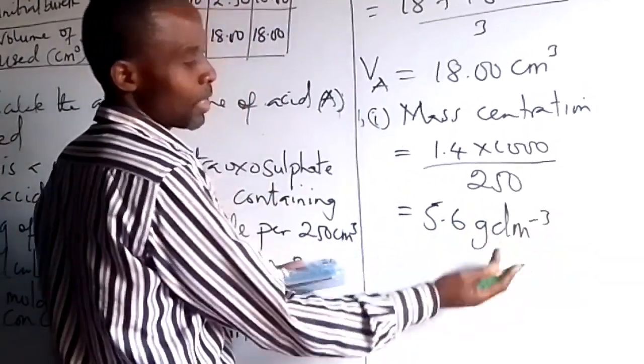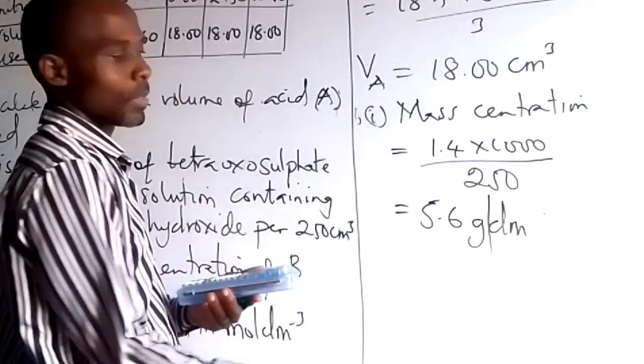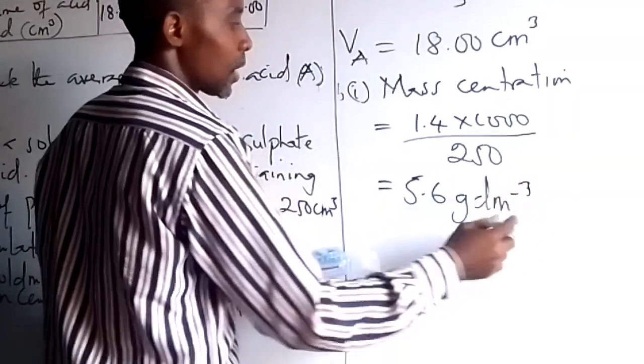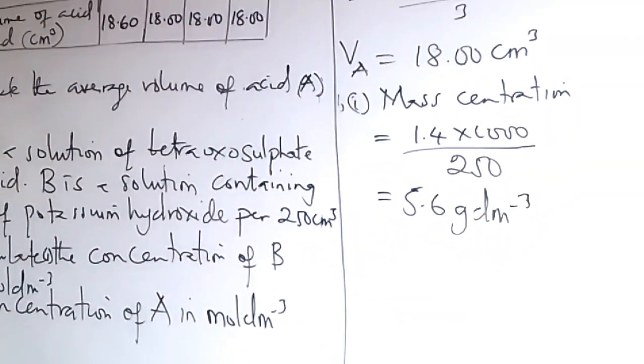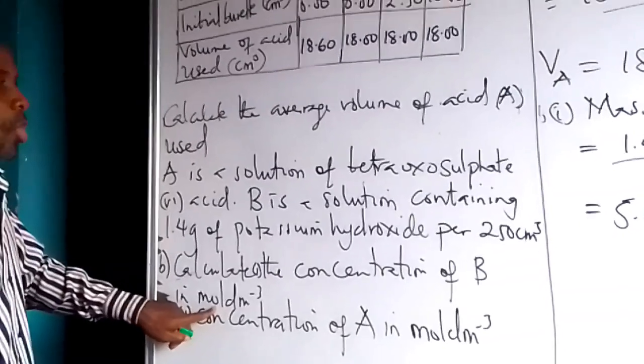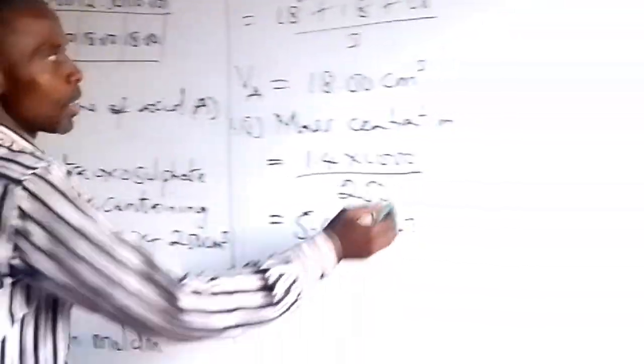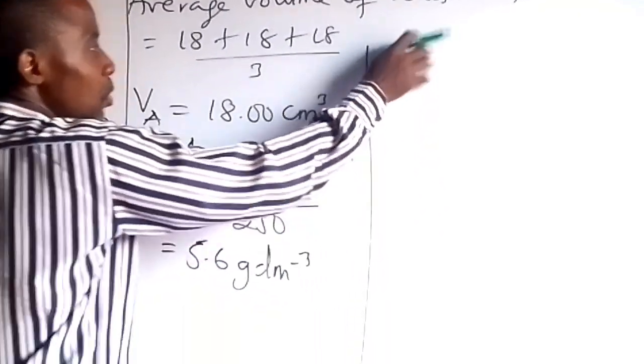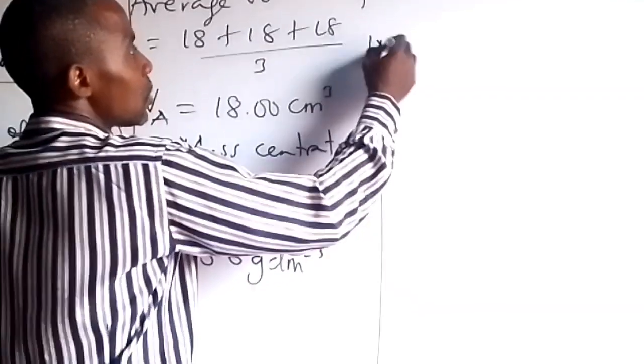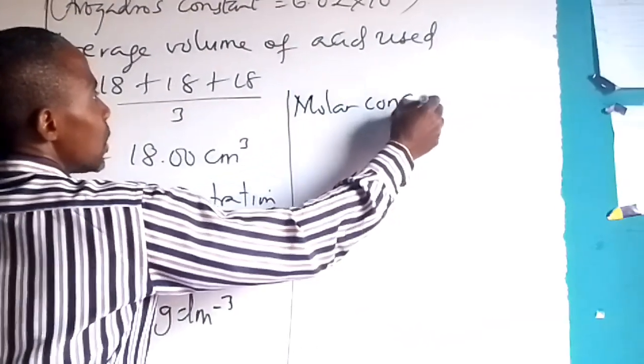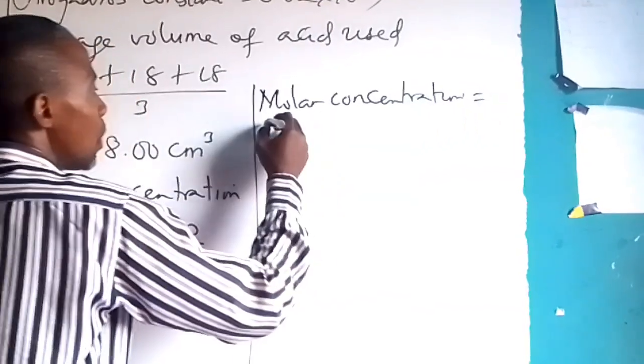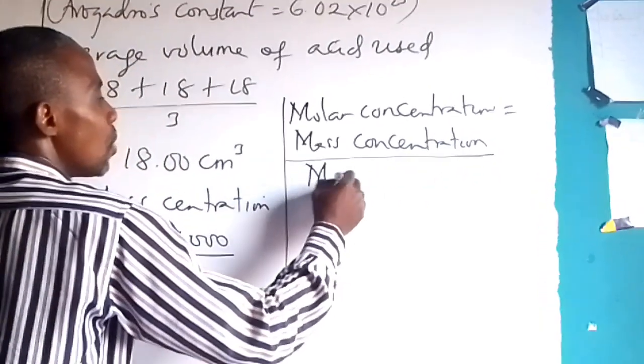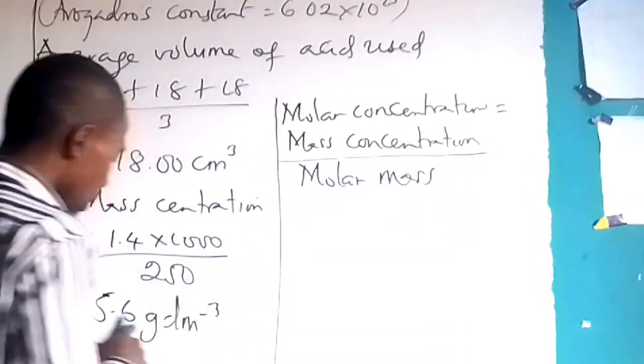So 1.4 times 1000 divided by 250 gives us 5.6 grams. 5.6 now. It can be written like this or like this, any one. So this is mass concentration. So we want to get molar concentration here. Permit me to write it here.